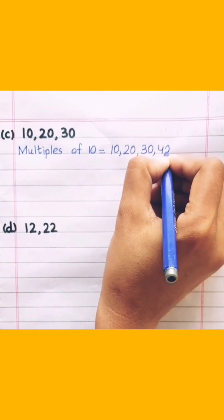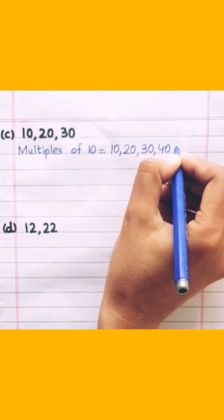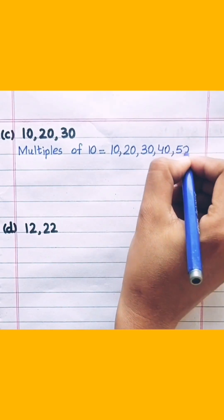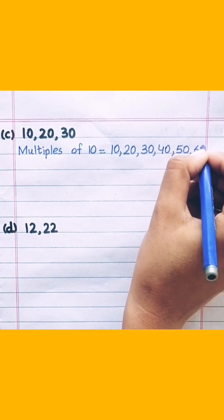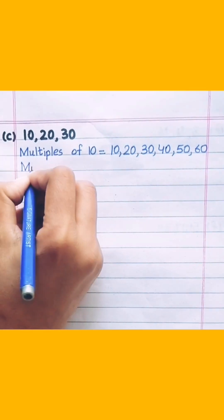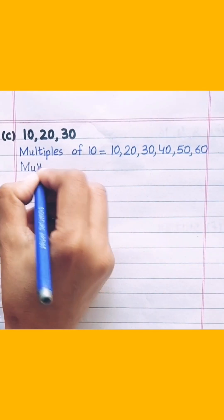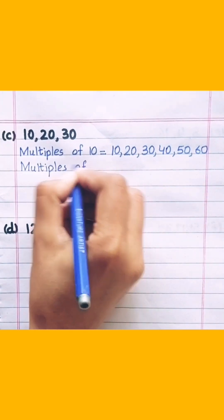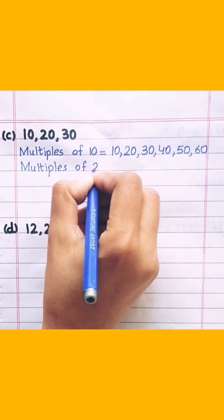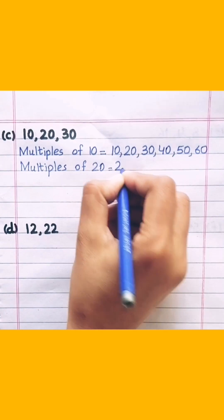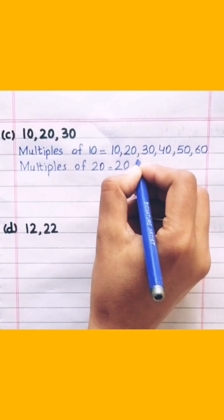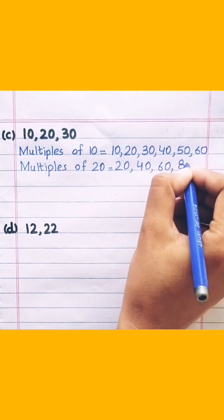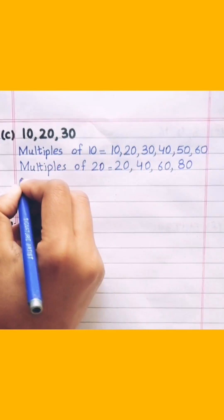Multiples of 10: 10, 20, 30, 40, 50, 60. Multiples of 20: 20, 40, 60, 80.